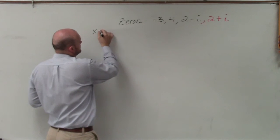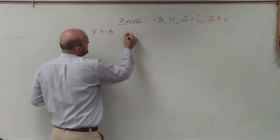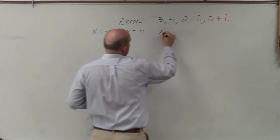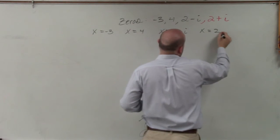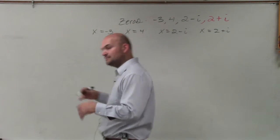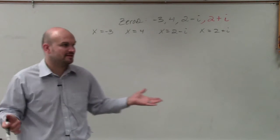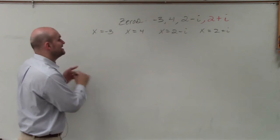So x equals negative 3, x equals 4, x equals 2 minus i, x equals 2 plus i. Then this is what I did before—I did a problem like this. Now you're just going to set them all equal to 0.